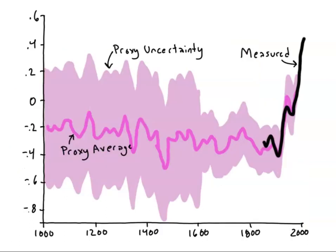A variety of data sets like tree rings as well as coral growth and other proxies were used to create one of the most famous graphs in climate science, the so-called hockey stick graph. The hockey stick shows that over the past thousand years, temperature anomalies have been less than half a degree in either direction. But these changes were enough to have significant effects on human societies.